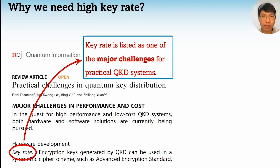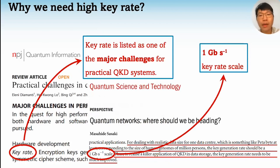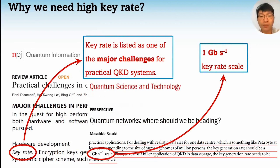The next question is: how much key rate do we need to find the killer application for QKD itself? Well, some perceptions are that for the data storage use case, the key generation rate should be in the one gigabit per second scale, using one-time pad.